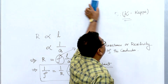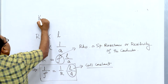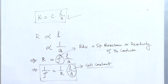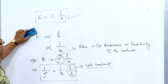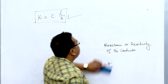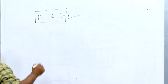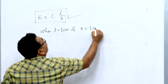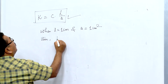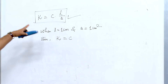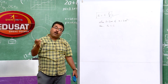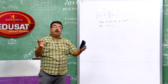So: κ = C × (L/A), meaning specific conductance or conductivity is the product of conductance and the cell constant. When L = 1 cm and A = 1 cm², κ = C. Therefore, conductivity equals the conductance of a cell having unit length and unit area of cross-section — or the conductance of 1 cm³ of a conductor.